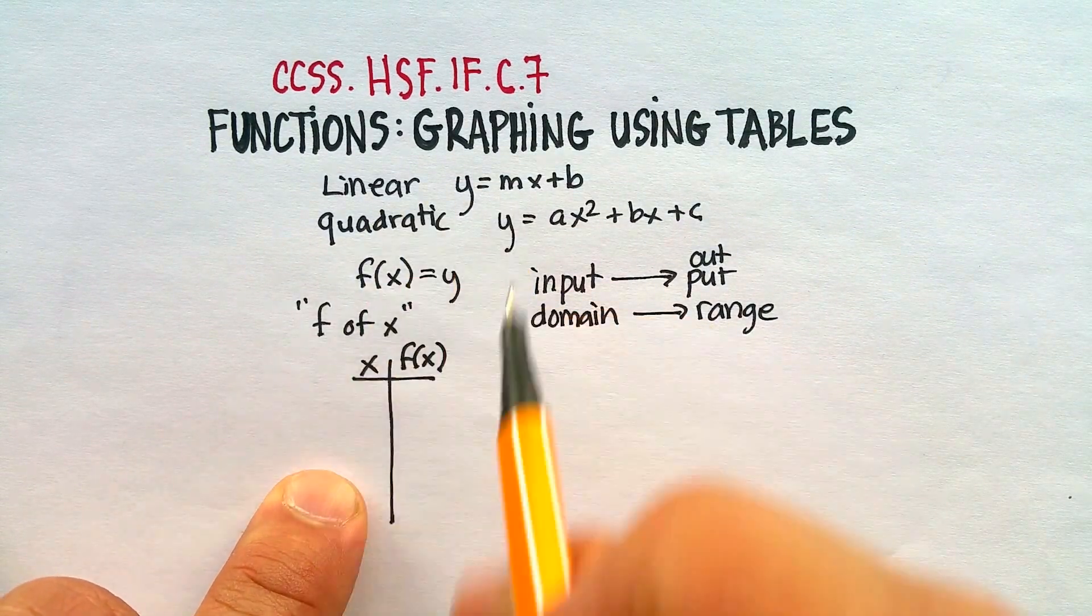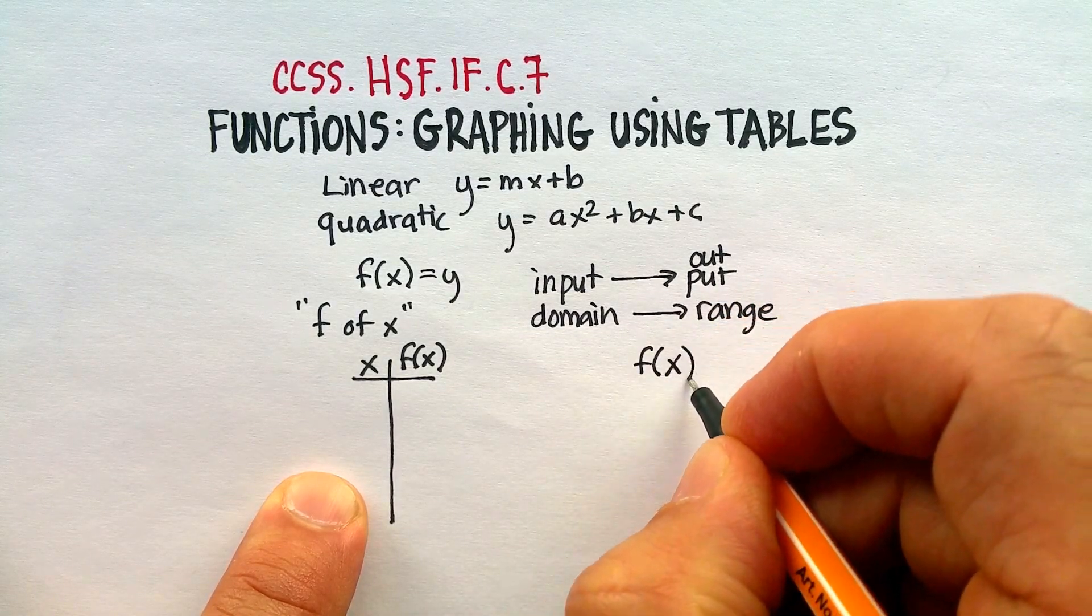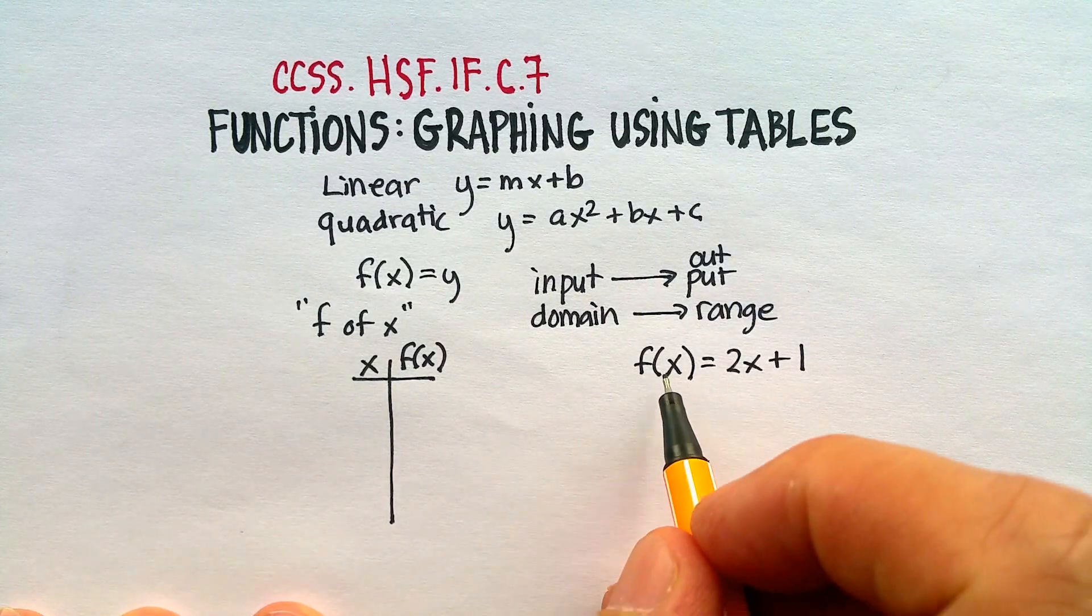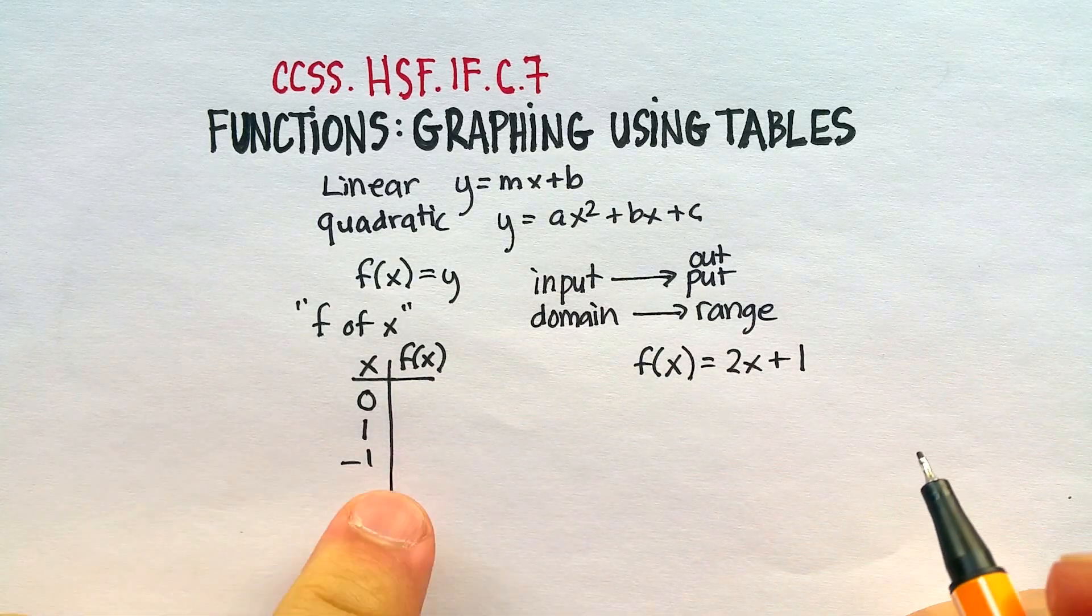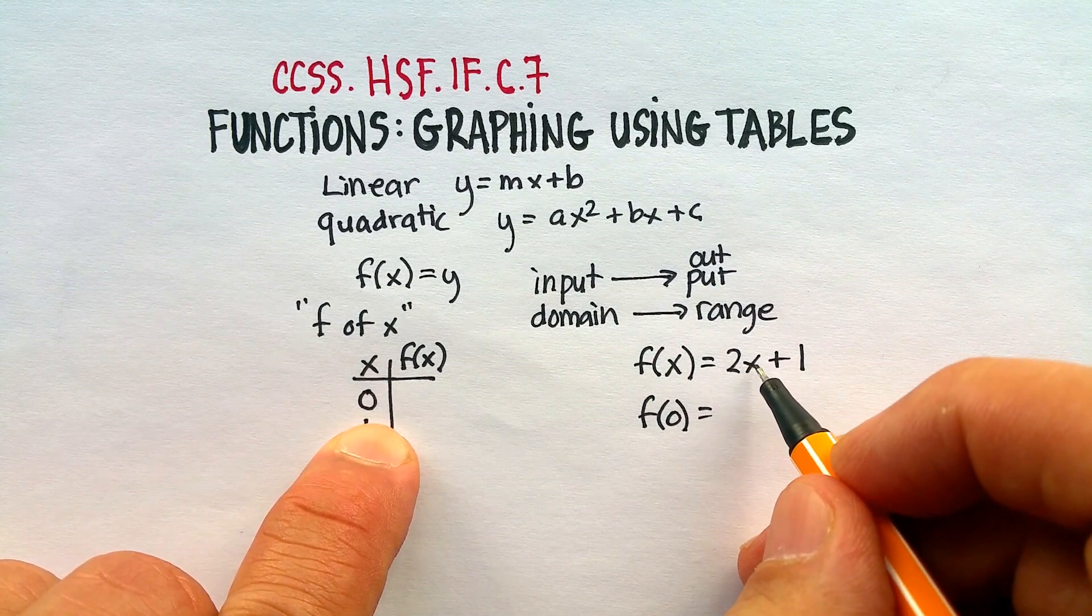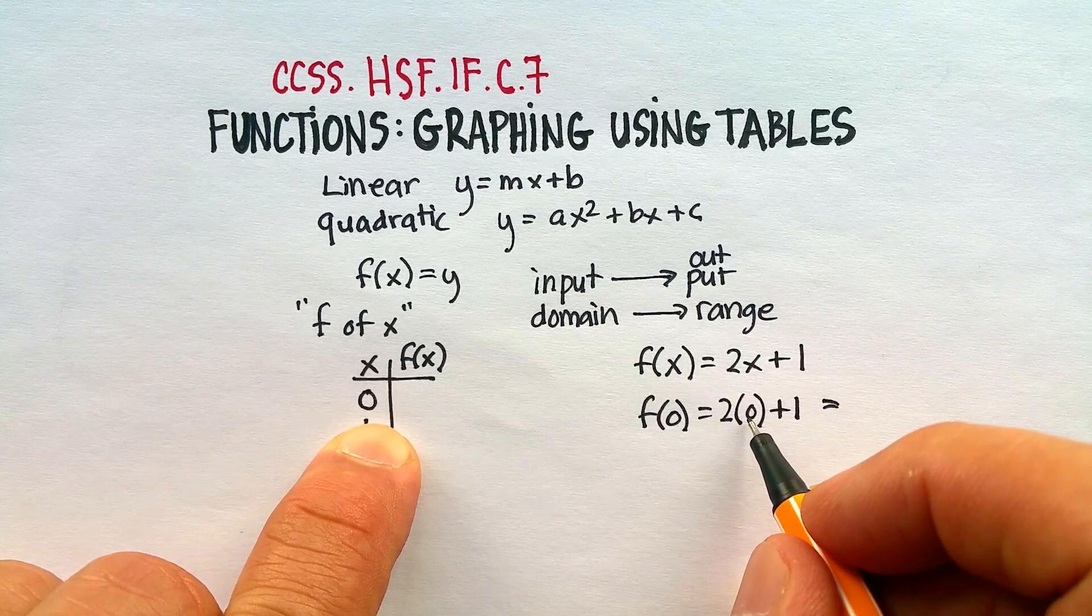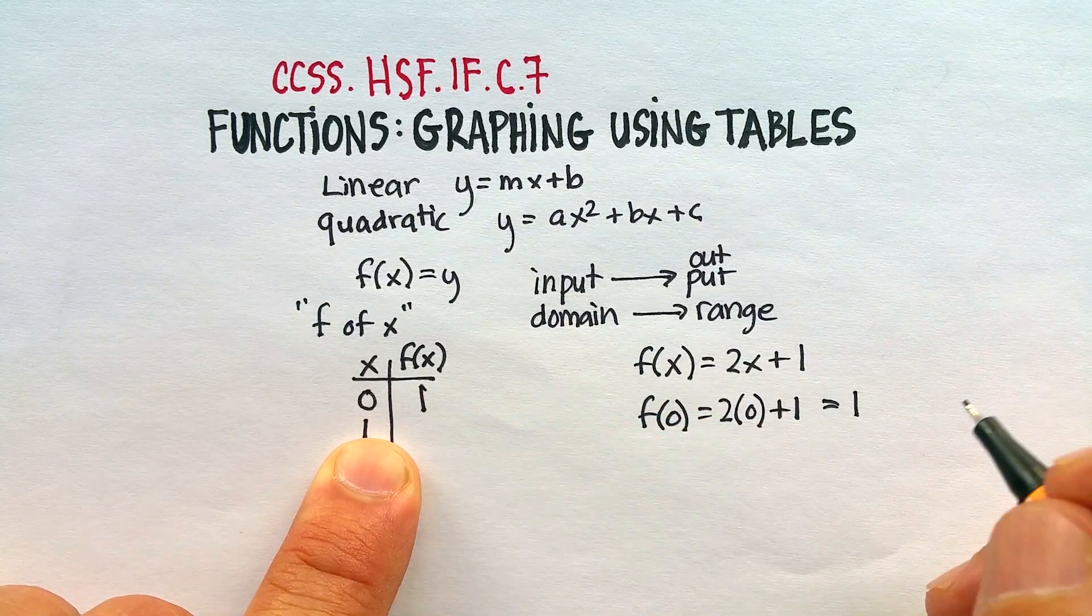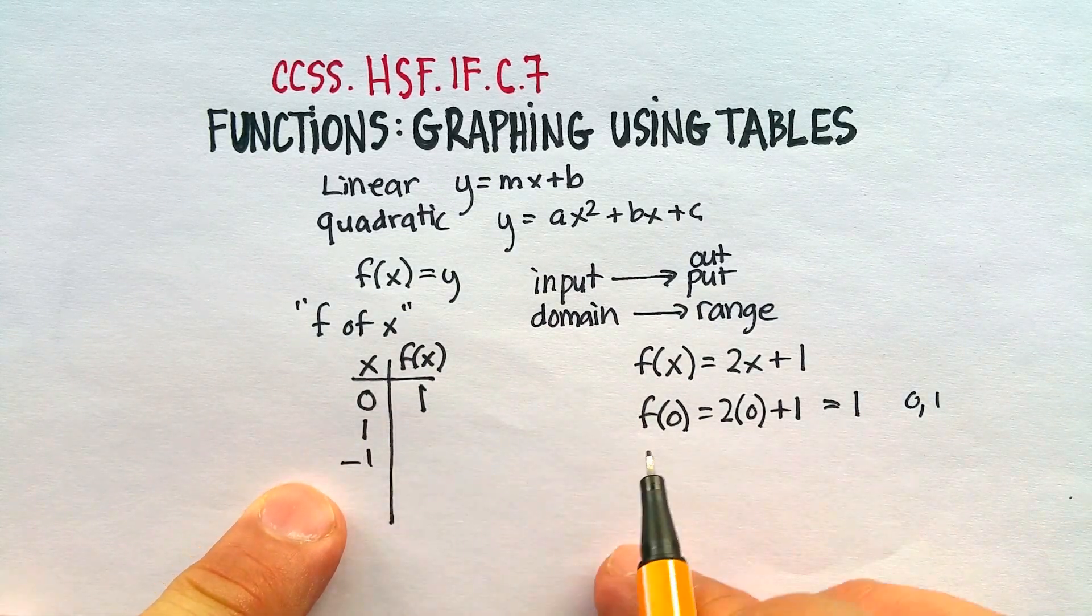What would be an example of that? Well, let's just do one of the linear equations because that would be easy. Let's say we have the following. f of x is equal to 2x plus 1. And we want to graph that. How would we do that? Well, we would need to choose some inputs. So let's just say our inputs would be things like 1, 2, negative 1. If you were to say f of 0 would be equal to, and then go ahead and replace the x with 0. So wherever you see x, put in 0.